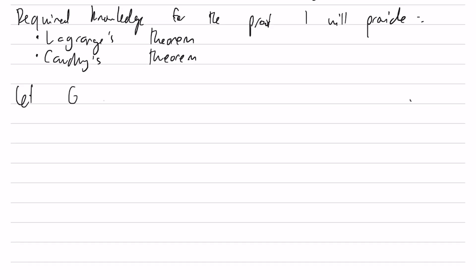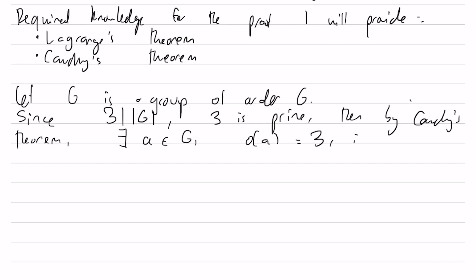So let's say G is a group of order 6. Since 3 divides the order of the group and 3 is prime, then by Cauchy's theorem there exists an element A in the group such that the order of A is equal to 3. That is, A cubed is the identity element, and A is not the identity element itself.